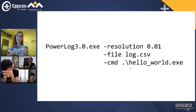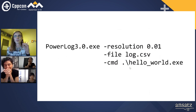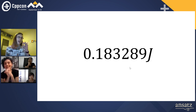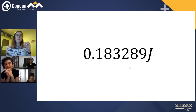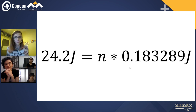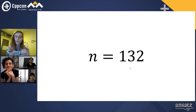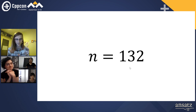Intel has this program called PowerLog3, which can tell us what the power consumption of our program is. This tells me that my Hello World program consumes 0.183289 joules of energy — I have no idea how accurate this is, but I'm trying my best. If an average human slap is 24.2 joules, then we could actually power 132 executions of our Hello World program in a single slap, which personally I think is incredible.